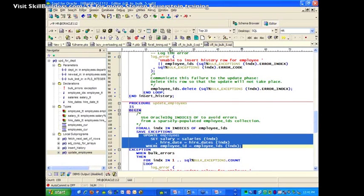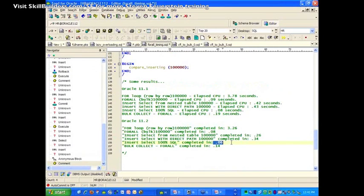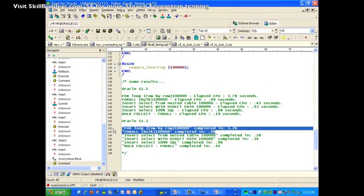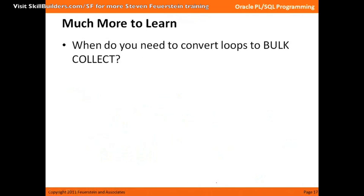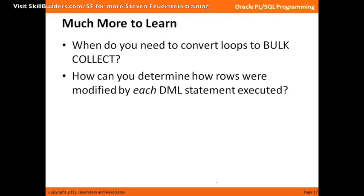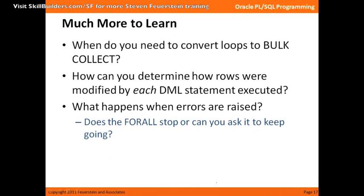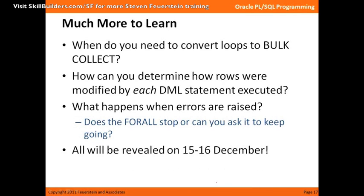What I wanted to give you a sense of is that this technology is incredibly performant. If you're looking for low-hanging fruit to get dramatic improvements in performance, the first thing you want to do is look for FORALL and BULK COLLECT opportunities. The next thing to be aware of is that it's no simple transformation — your code will get much more complicated. There are lots of nuances: when do you need to convert loops to BULK COLLECT, how do you track rows modified per DML statement, and what happens when errors are raised? These are all nuances I'll cover in my training. The key takeaway: if you ever see DML inside a loop — the same statement running over and over — you need to optimize that with FORALL.